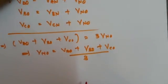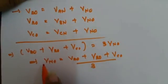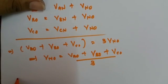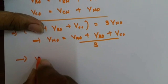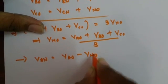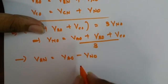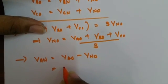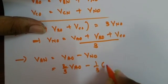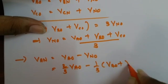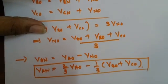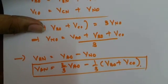So now for the calculation of V_AN, we can substitute this V_NO value back into the equation. We can have V_AN, and similarly V_BN and V_CN. So V_AN = V_AO − V_NO, and if we place this V_NO value in, then V_AN = (2/3)·V_AO − (1/3)·V_BO − (1/3)·V_CO. So V_AN equals (2/3)·V_AO minus (1/3)·(V_BO + V_CO).